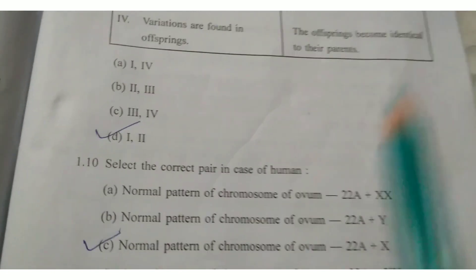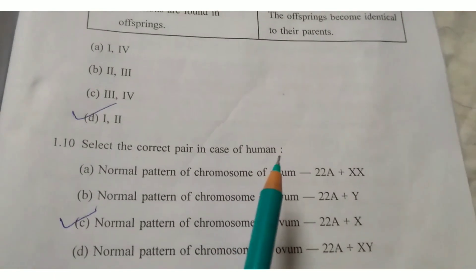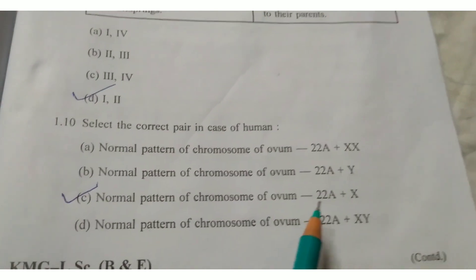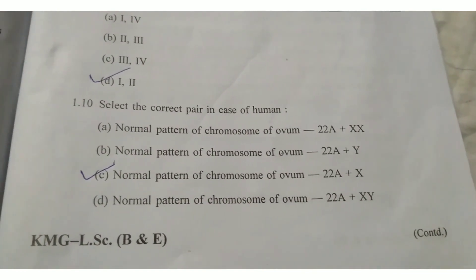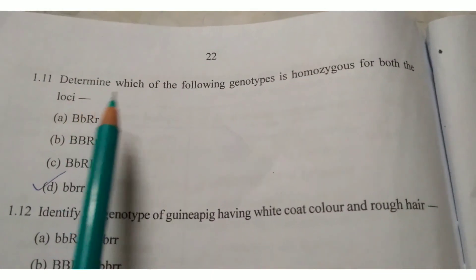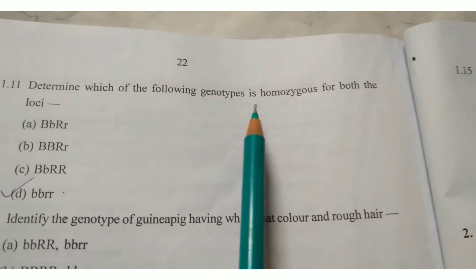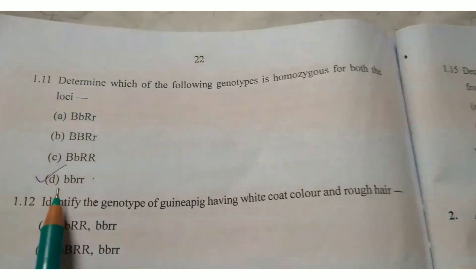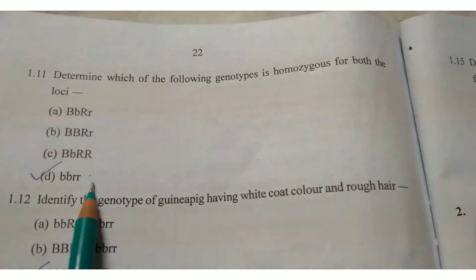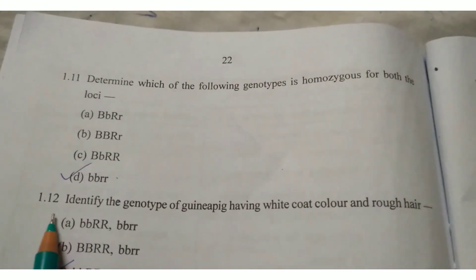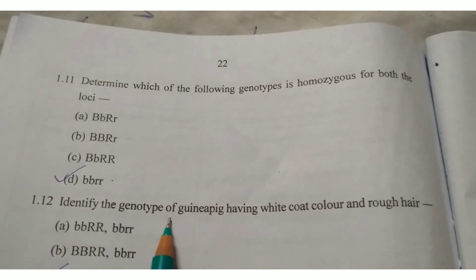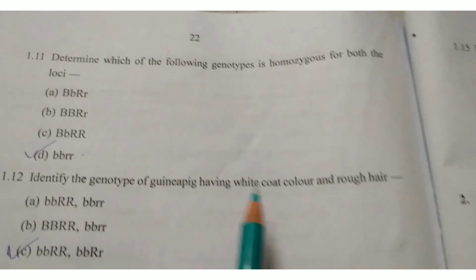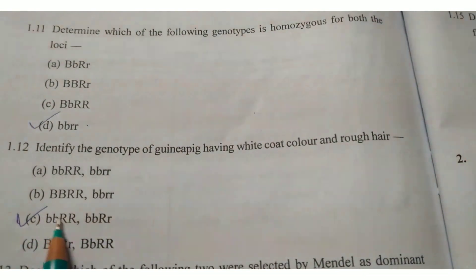Next, question 1.10: Select the correct pair in case of human. Write answer option C — Normal pattern of chromosome of ovum: 22A plus X. Next, question 1.11: Determine which of the following genotypes is homozygous for both loci. Write answer option D — bb, rr. Question 1.12: Identify the genotype of guinea pig having white coat color and rough hair. Write answer option C — bb rr.